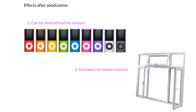After anodization, there are two effects. First, we can dye the objects with more attractive colors. For example, iPod Shuffles come in many different colors. The aluminium oxide layer has some pores in it, which makes it easier to hold dye, so it is easier to color the object attractively.